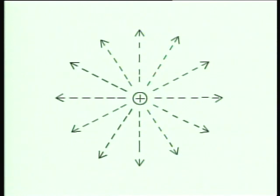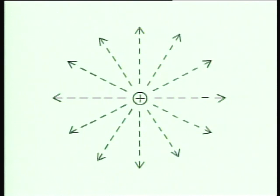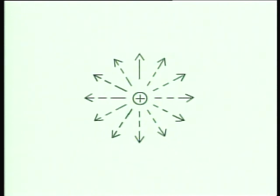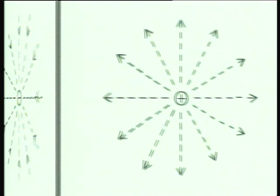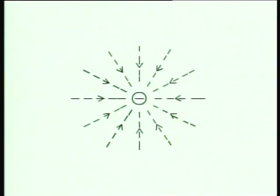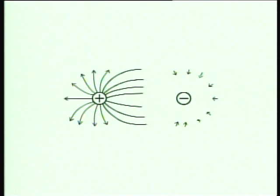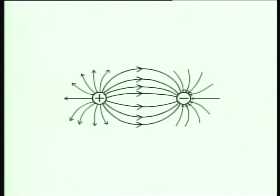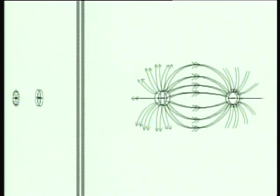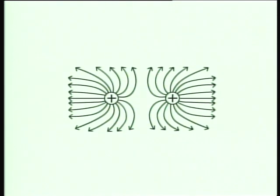From symmetry, it is evident that the direction of the force upon a positive charge anywhere near Q would be radially away from it. Hence, the lines of force of an isolated positive charge go straight out in all directions, while the lines of force of an isolated negative charge point towards the negative charge. The direction of lines of force between a positive and negative charge is from positive towards negative. The lines of force above two positive charges are shown repelling away.